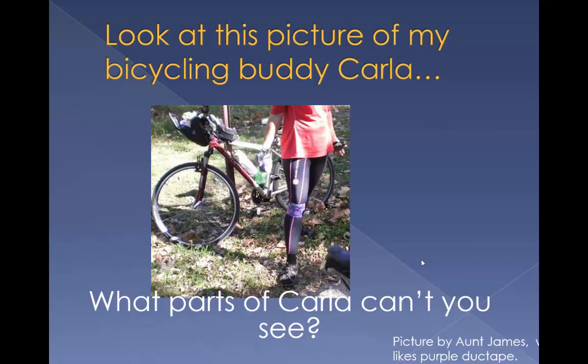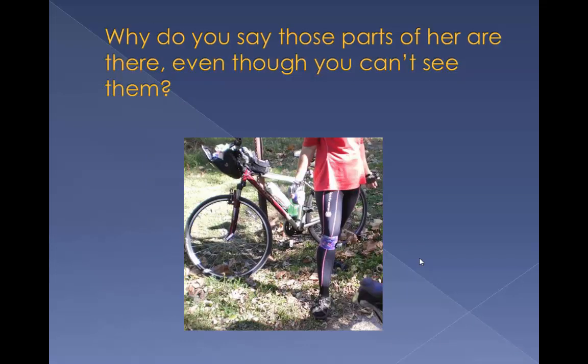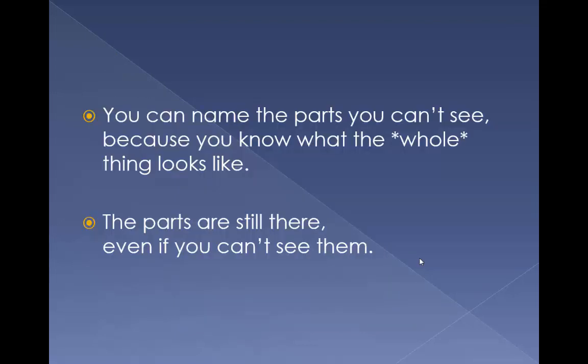Look at this picture of my bicycling buddy Carla. What parts of Carla can't you see? Why do you say those parts are there even though you can't see them? You can name the parts you can't see because you know what the whole thing looks like. The parts are still there even if you can't see them.